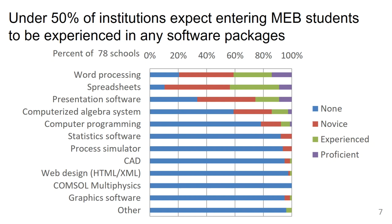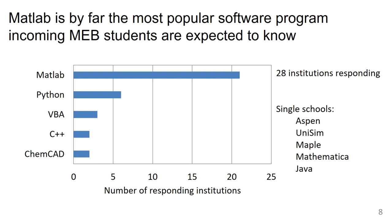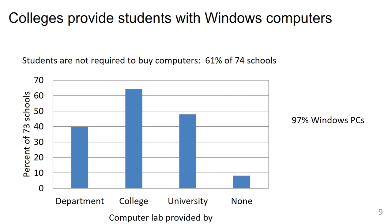Looking at the purple, green, and red together, we can see that we do expect at least some experience with word processing, spreadsheets, and presentation software. Of the schools that do expect some software experience, MATLAB is the computer algebra system expected by far. For programming languages, Python is the most common, over VBA, C++, and Java.